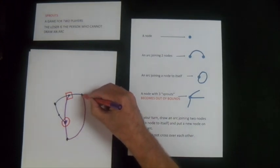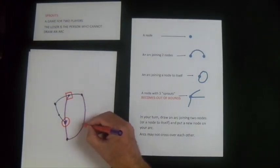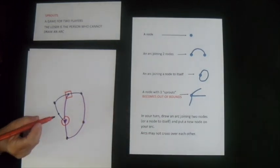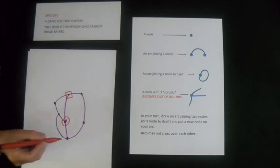I'm going to draw an arc from there to there, and I'm going to put a new node on it. My arc is going to go from this node to there. There's my middle node.